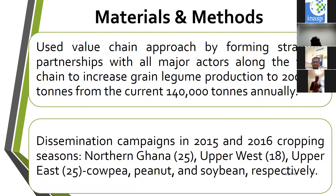The project's main approach was to use a value chain approach to form strategic partnerships with major actors, because production was just one aspect — what happens along the value chain is key for farmers' economic sustainability. By the time we ended, we had over 200 partners along the value chain: seed producers, companies providing tractor services, plows, harrows, and combined harvesters for farmers at a fee.